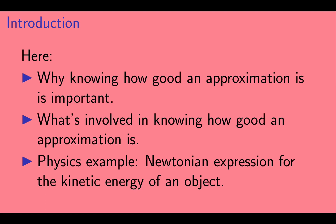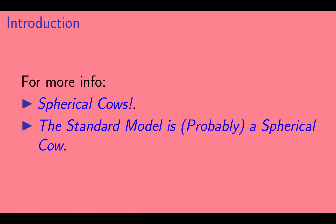Then we'll give an example from physics — we'll look at the expression for the kinetic energy of an object in Newtonian mechanics. There are a couple of related videos available on this channel. The first is just called Spherical Cows. The second is related to the role of spherical cows in particle physics and is called The Standard Model Is Probably a Spherical Cow.